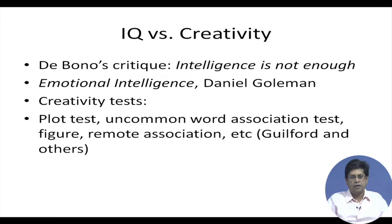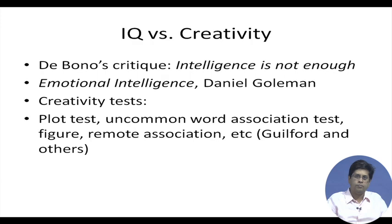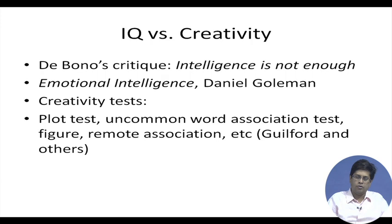Daniel Goleman popularized the concept of emotional intelligence, giving rise to EQ. This differentiates intelligence from other equally important attributes — from purely analytical skills to other skills of the mind. Emotional intelligence is discussed in other lectures in detail, but it can be pitted against the concept of creativity as well. In the 1960s and 70s, a lot of interesting creativity tests were developed that give us insight into what people try to explore under the construct of creativity.